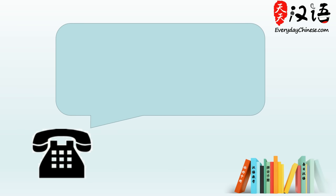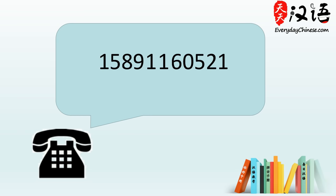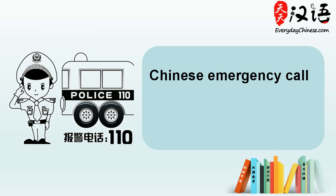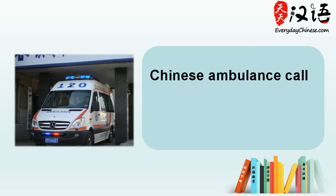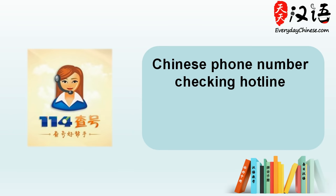我的电话号码是13751318079. 我的电话号码是15891160521. Here are some Chinese numbers to practice. The first is the Chinese emergency call: 110. The second is the Chinese ambulance call: 120. And the third is the Chinese phone number checking hotline: 114.